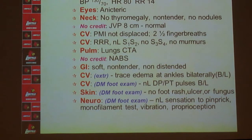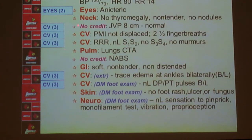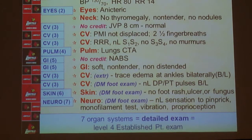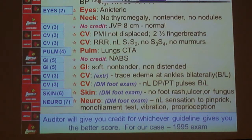Auditing against the 1995 guidelines, I'm counting organ systems: constitutional, eyes, cardiac, pulmonary, GI, skin, and neuro — that's eight organ systems. Note that neck is a body area, not an organ system, and you can't mix organ systems and body areas when counting for the 1995 exam. Eight organ systems is enough for a Level 4 detailed exam under 1995 guidelines. An auditor will always give you credit for whichever set of guidelines is more advantageous, so in this case Level 4 under 1995.